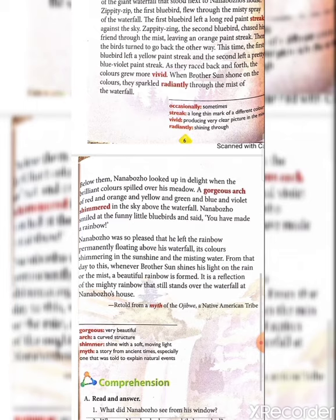From that day to this day, whenever Brother Sun shines his light on the mist or rain, a beautiful rainbow is formed in the sky or on the waterfalls. Rainbow is a sign of hope, and also it's a reflection of the mighty rainbow that still stands over the waterfall at Nanbojo's house.